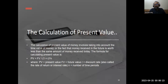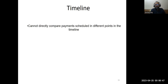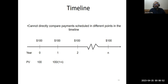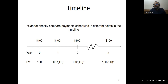The calculation of present value involves taking into account the time value of money — the fact that money received in the future is worth less than the same amount received today. The formula is: PV = FV / (1 + r)^N. You cannot directly compare payments from different periods in time. So $100 received one year from now equals $100 / (1 + i)^1, from two years from now equals $100 / (1 + i)^2, and N years from now equals $100 / (1 + i)^N.